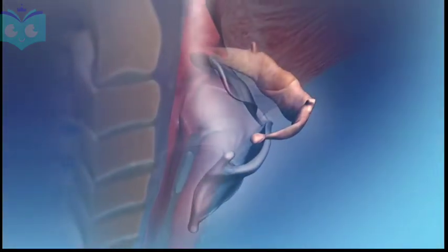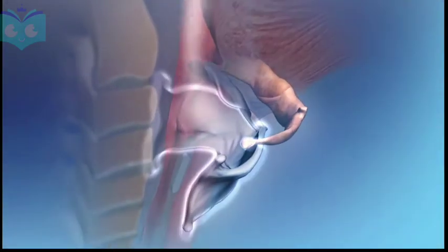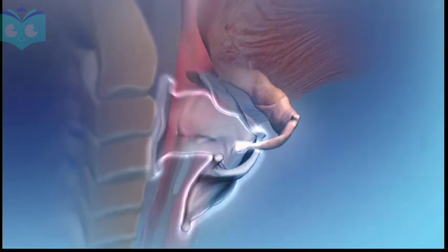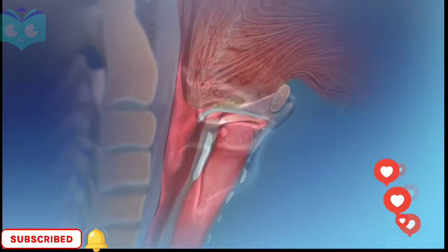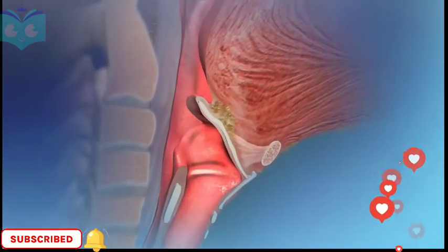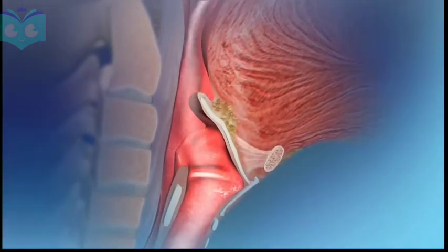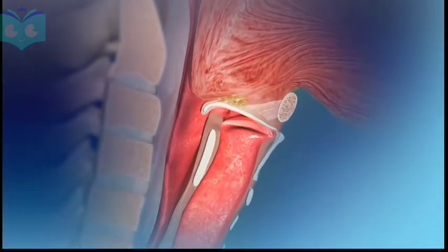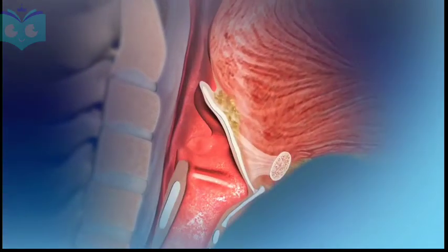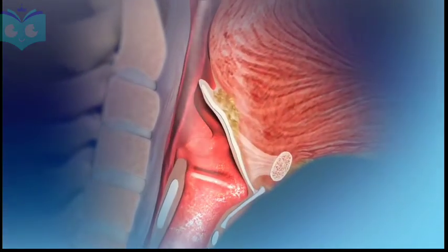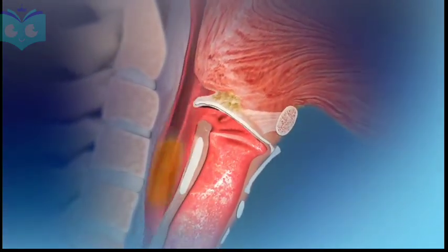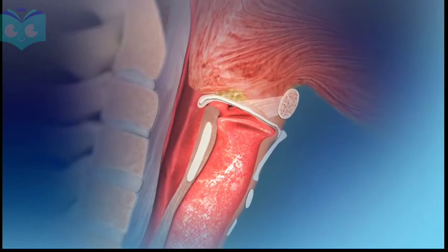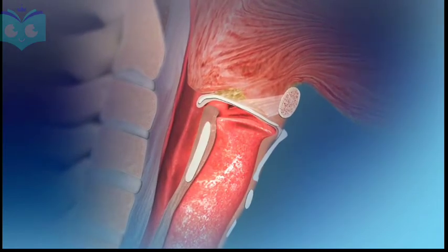The stem of the epiglottis attaches to the anterior rim of the thyroid cartilage. The superior portion of the epiglottis can move freely and swing up and down like a trapdoor flap. With each swallow, the larynx rises.